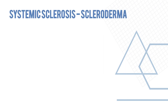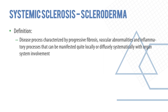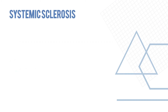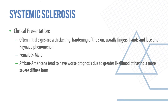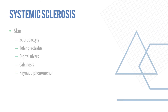Systemic sclerosis, or scleroderma, is a process characterized by progressive fibrosis, vascular abnormalities, and inflammatory processes that can be manifested locally or systemically with organ system involvement. It is a poorly understood disease. The clinical presentation often involves thick and hard skin, usually the fingers, hands, and face, along with Raynaud's phenomenon. Females are affected more than males; African Americans tend to have a worse prognosis due to a greater likelihood of a more severe diffuse form. Skin changes include sclerodactyly, telangiectasias, digital ulcers, calcinosis, and Raynaud's phenomenon.